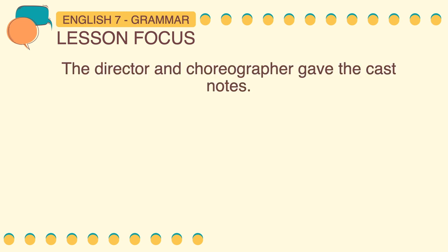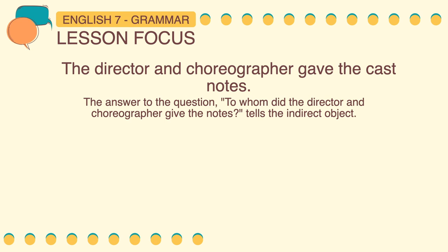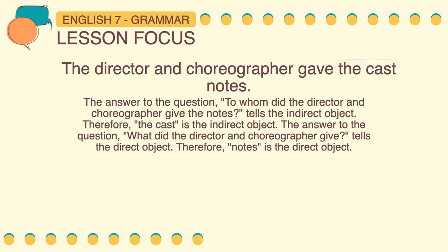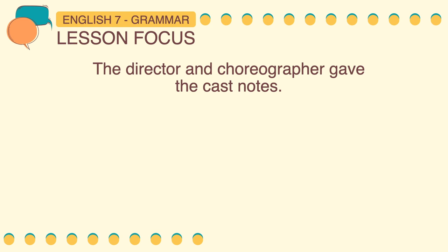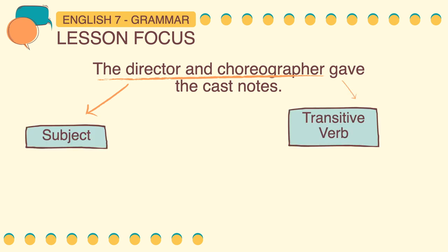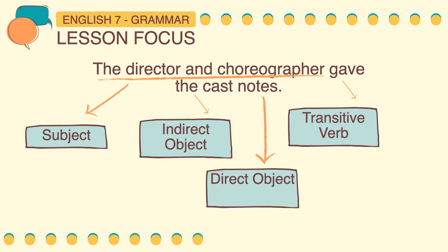Last example sentence: The director and choreographer gave the cast notes. The answer to the question to whom did the director and choreographer give the notes tells the indirect object. Therefore, the cast is the indirect object. The answer to the question what did the director and choreographer give tells the direct object. So, the director and choreographer is the subject, gave is the transitive verb, the cast is the indirect object, and notes is the direct object.